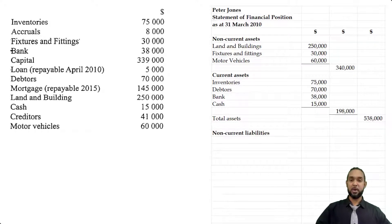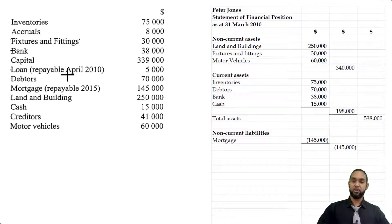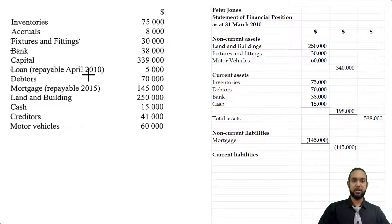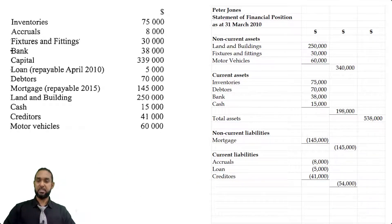Now we subtract our liabilities, starting with non-current liabilities because they are more permanent than current liabilities. There was only one non-current liability: the mortgage payable 2015 of $145,000. For multiple non-current liabilities we'd put details in the leftmost column and the subtotal in the middle column. For current liabilities we have accruals (accrued expenses), the loan repayable April 2010 — which is definitely current since April 2010 is within one year of the March 31st 2010 balance sheet date — and creditors or accounts payable $41,000, giving a current liabilities subtotal of $54,000.